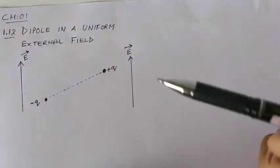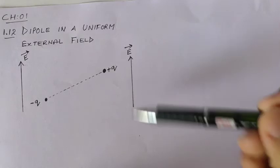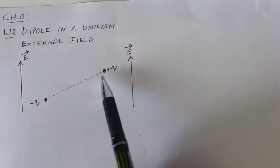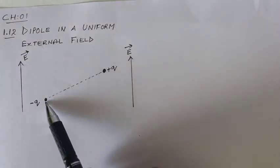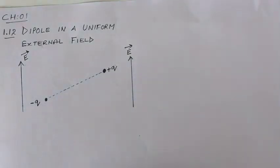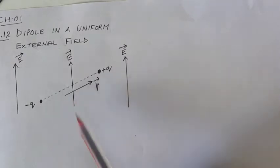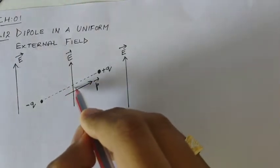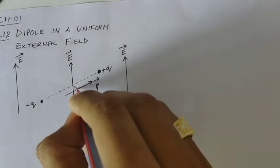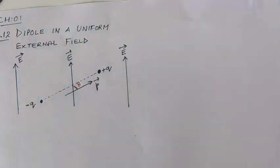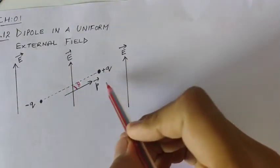Let's understand a dipole in a uniform external field with its diagram. As shown in the figure, the electric field is in the positive y-direction, and this is a dipole with its dipole moment pointing from negative to positive. The angle between the electric field and the dipole moment is theta.